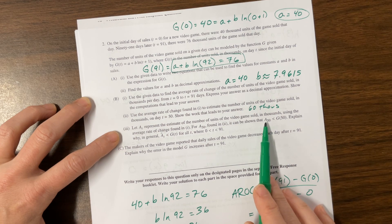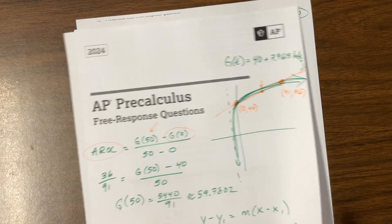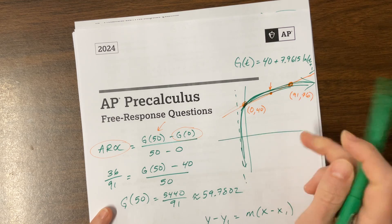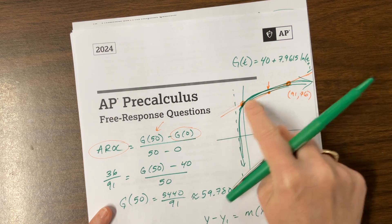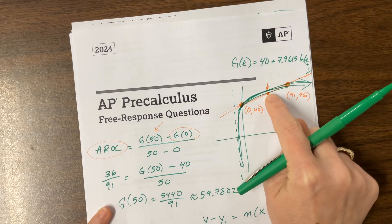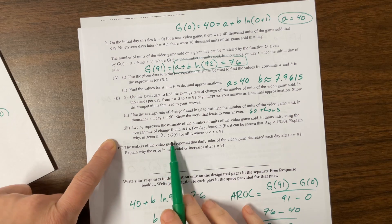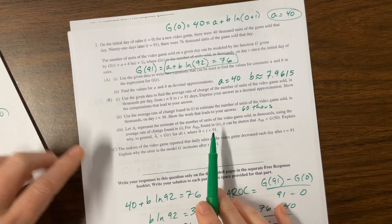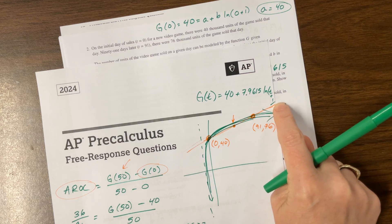It can be shown that our estimate is less than the actual value. That's because between these two points, since this is concave down, the estimate — the line that helps us find the estimate — is below the actual curve. But beyond 91, the estimate would now be above the curve.